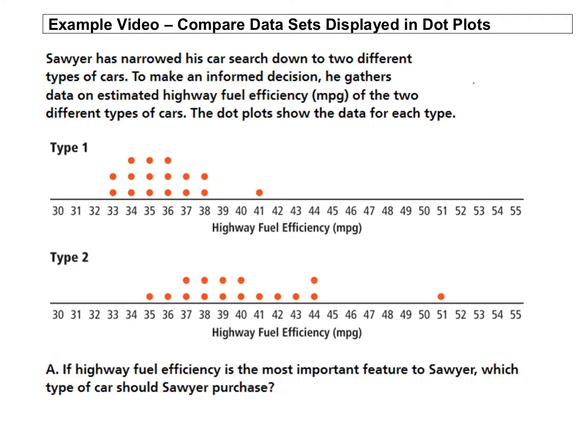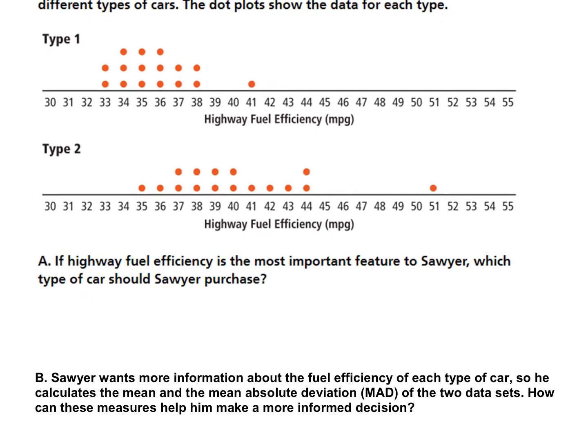So the first question: if highway fuel efficiency is the most important feature to Sawyer, which type of car should Sawyer purchase? Based on that, he should purchase the type two vehicle that he researched. We can see that the miles per gallon is a little bit higher than what the type one cars are getting while driving on the highway.